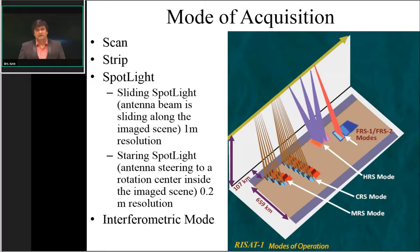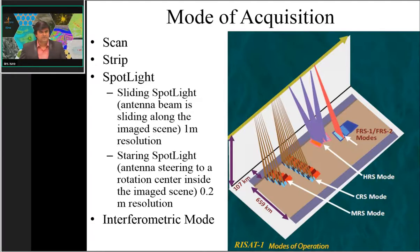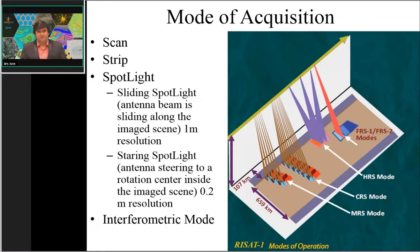In sliding spotlight mode, data is provided at approximately one meter resolution. In staring spotlight mode, TerraSAR-X can provide data with 25 cm resolution. A fourth category is interferometric mode, in which ScanSAR mode, stripmap mode, and spotlight mode may all be operated. Interferometric mode is a special mode in which two datasets are acquired in the same SAR geometry configuration.